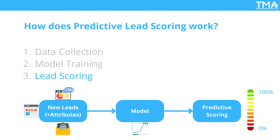Finally, we have lead scoring. Once your model is trained, it can analyze new leads and assign them a score — usually between 0 and 100 — indicating their likelihood to convert. A high score means the lead shares many characteristics with your past customers who converted, while a low score suggests they may need more nurturing or may not be the right fit.